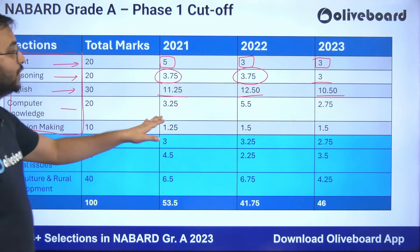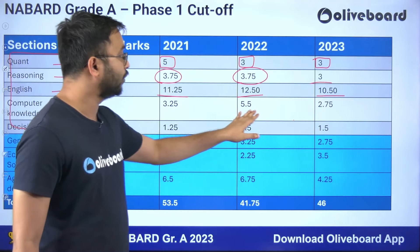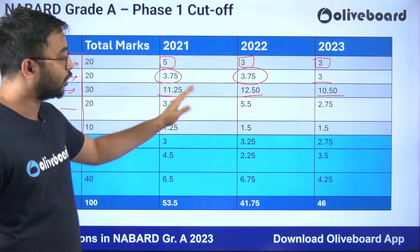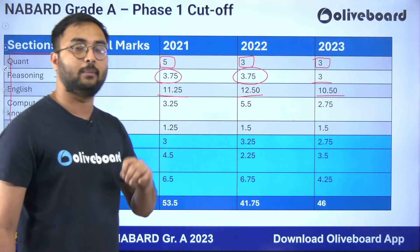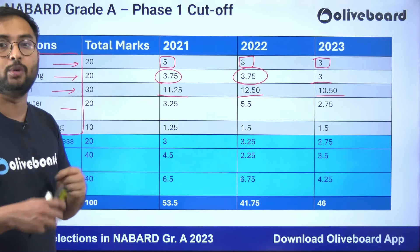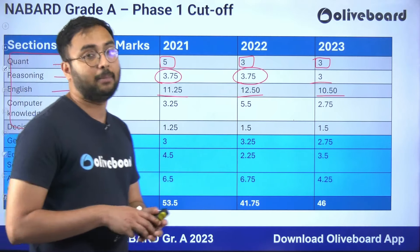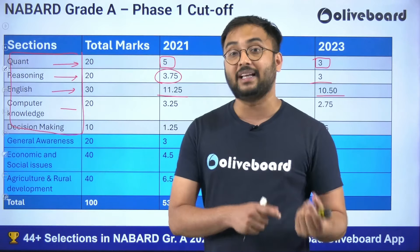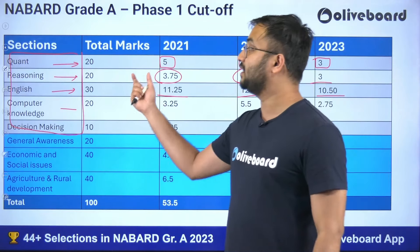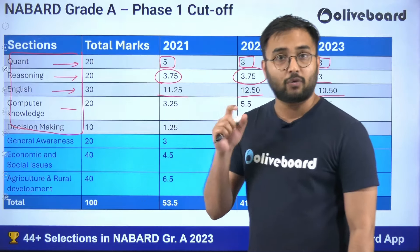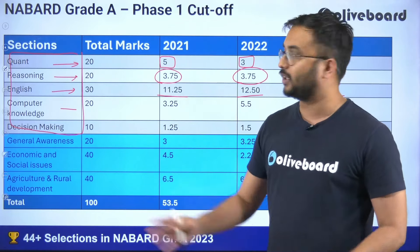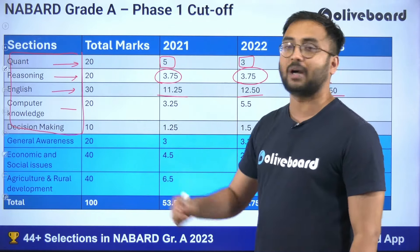For computer knowledge, the cutoff is 3.25 in 2021, 5.5 in 2022, and 2 in 2023 — ranging up to 5. I recommend solving at least 8 questions in computer. Your section-wise strategy should be clear. If the cutoff for quant is not beyond 5 marks, there is no point solving 10 questions for quant, because qualifying marks are not counted in the tally.